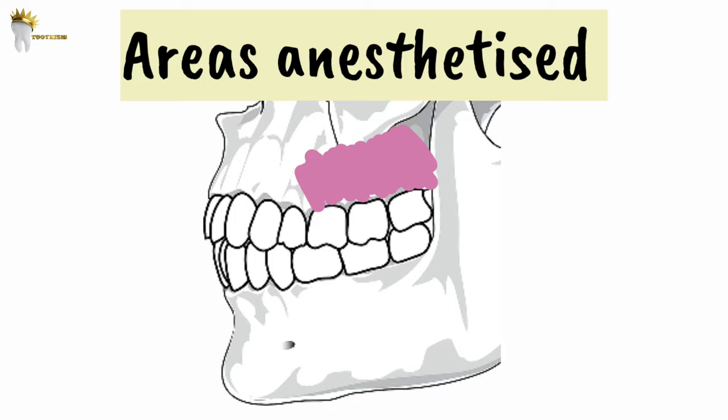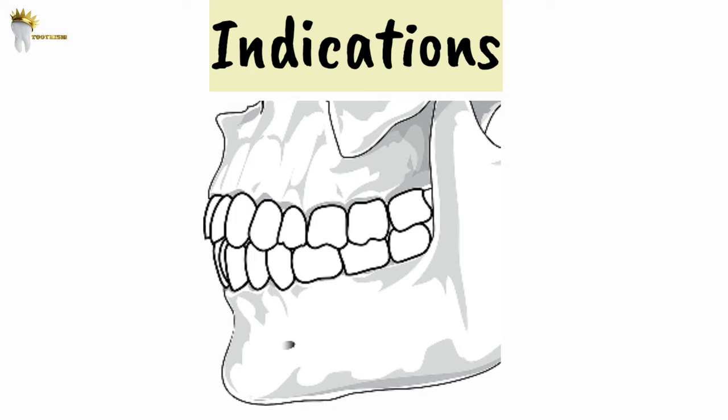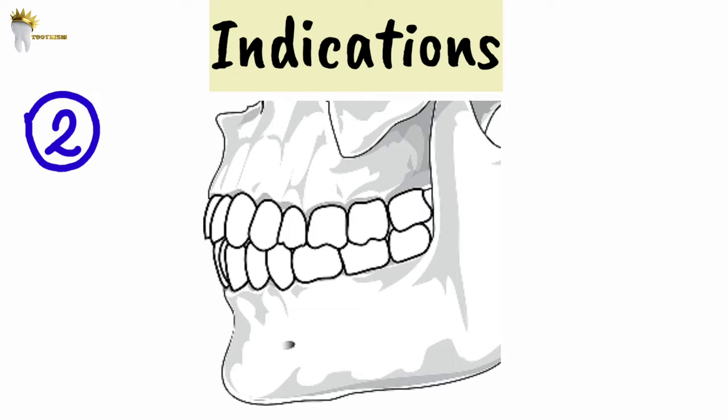When we need to treat just one maxillary molar, we can give local infiltration. But when we need to treat two or more maxillary molars, we need to administer the PSA block. Sometimes local infiltration is contraindicated — for example, when there is infection or inflammation — in which case the PSA block is recommended. The PSA block can also be given when local infiltration doesn't work.